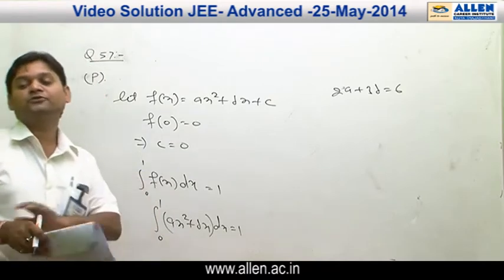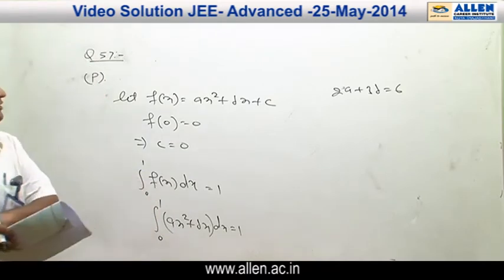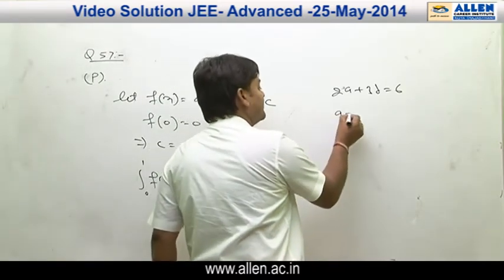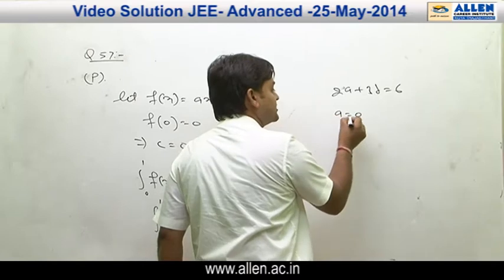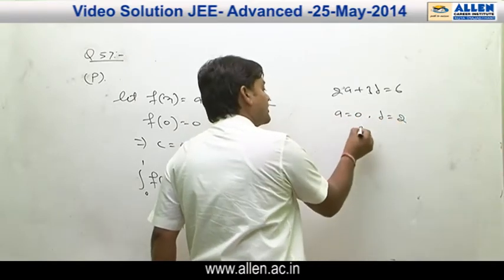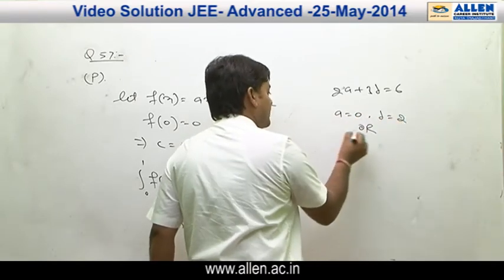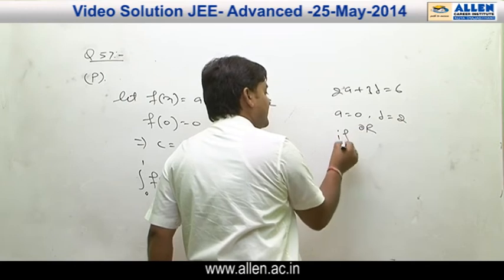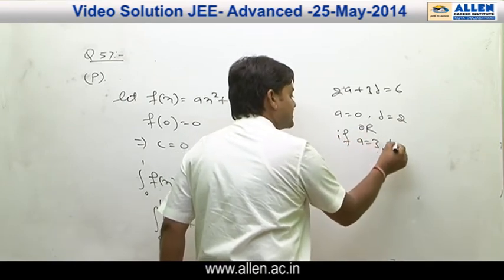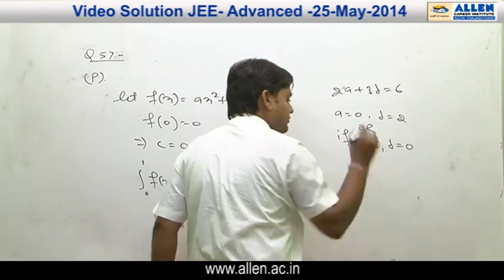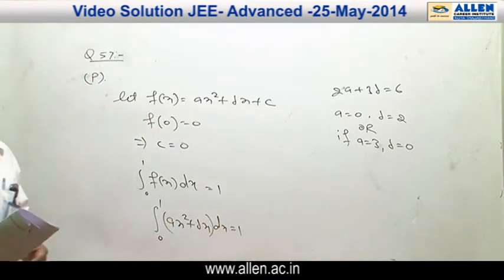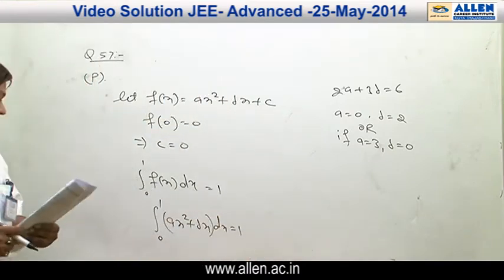Now here we have two non-negative solutions. The first solution is: if A = 0, then B = 2. Or if A = 3, then B = 0. So there will be two solutions.